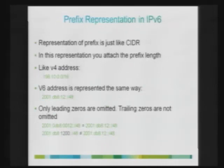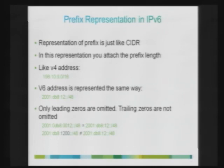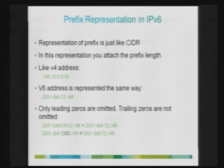Prefix representation in IPv6 is similar to classless inter-domain routing (CIDR) in IPv4. If the prefix portion uses 48 bits out of 128 bits, then the prefix is represented as /48. Like IPv4 representation, after the prefix ID the rest of the bits can be put as zeros, abbreviated as a double colon. In each 16-bit block, you can omit leading zeros but not trailing zeros, otherwise it changes the meaning of the address.